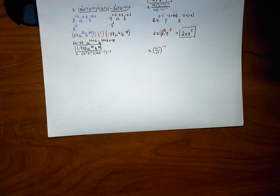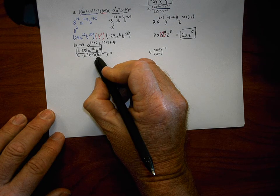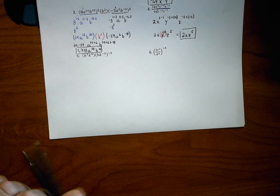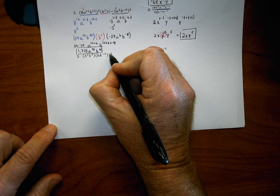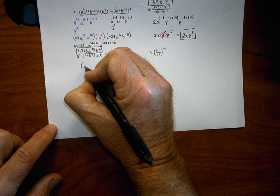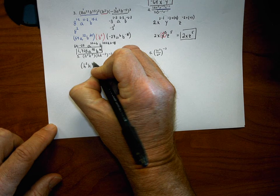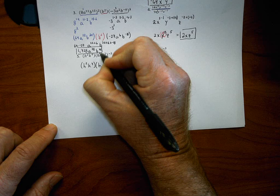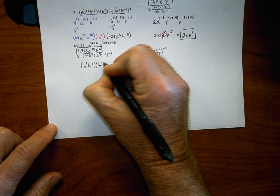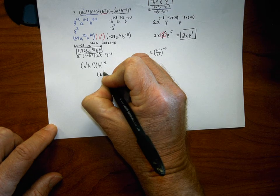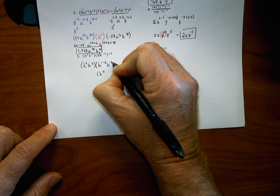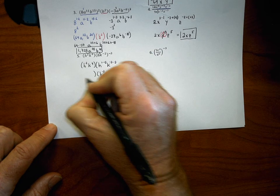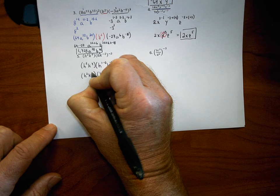Moving to number five: we have x squared k to the fourth multiplied by — actually it's h to the first power k to the negative second — with an outside exponent of negative three. The first set of parentheses has no outside exponent so I leave it alone. For the second set, using the power to a power rule: h with inside exponent one times outside exponent negative three gives h to the negative third.